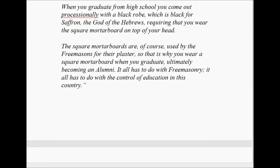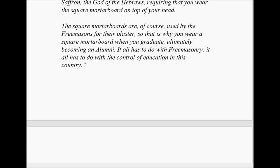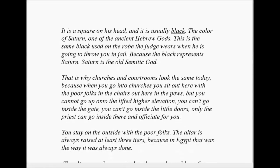Then you get into the square black mortar board that university or high school students wear when they graduate. When you graduate from high school, you come out processionally with a black robe — which is black for Saturn, the god of Hebrews — requiring that you wear the square mortar board on the top of your head. This is Saturnian in principle. The square mortar boards are of course used by the Freemasons for their plaster. That is why you wear a square mortar board when you graduate, ultimately becoming an alumni. It all has to do with Freemasonry.